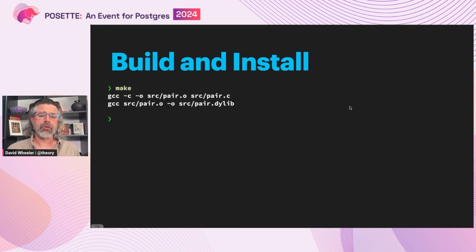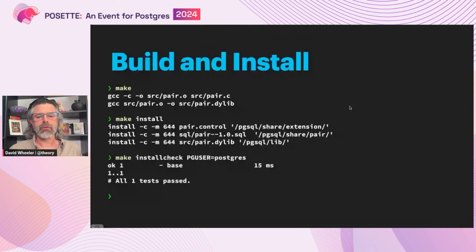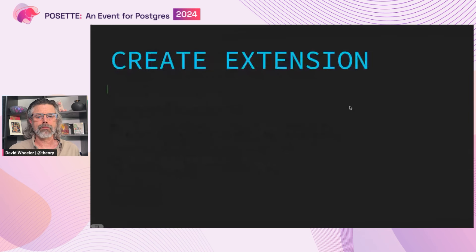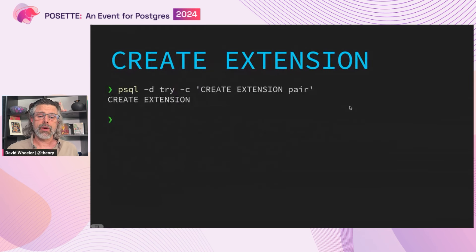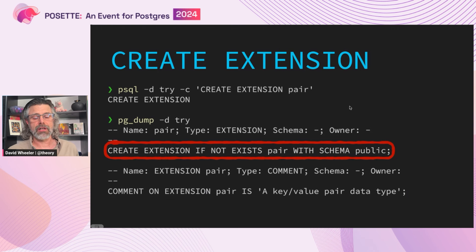This setup enables straightforward compilation of C and SQL extensions by running make. Then make install installs all the relevant files, including the control file, SQL files, and DSOs. And finally, make installcheck runs the pg_regress tests against the newly installed extension. Now the user can use CREATE EXTENSION to add the extension to a database, and thanks to bundling features into a single unit, pg_dump output can likewise simply install the extension as before.